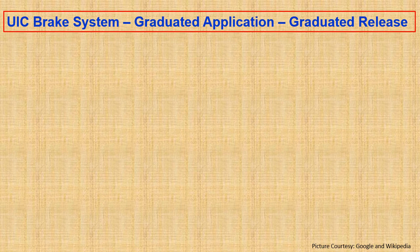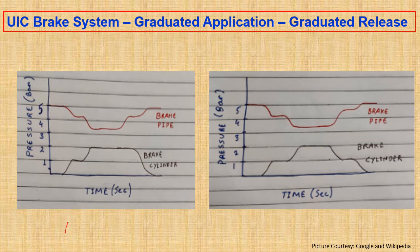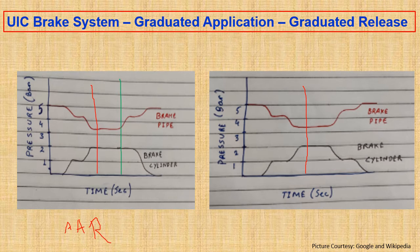Now let's look at the UIC brake system, which features graduated application and graduated release. Comparing the two curves — the left-hand curve is AAR type and the right one is UIC type — from the application point of view both are the same: you can apply brakes in steps. But for release, in the AAR system the brakes release in one shot, whereas in UIC you can release the brakes in steps according to the brake pipe level. This gives an enormous advantage for passenger trains and short-haul freight trains, where you can apply a full brake and then partially release to start moving the train as quickly as possible when the signal turns green.